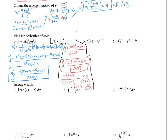Next, f of x equals 8 to the power of 4x to the fifth. We use the exponential derivative formula: the derivative of a to the x is a to the x times ln a. So f prime of x equals 8 to the 4x⁵ times ln 8. Then chain rule gives us times 20x to the fourth. Final answer: 20x to the fourth times ln 8 times 8 to the 4x to the fifth.